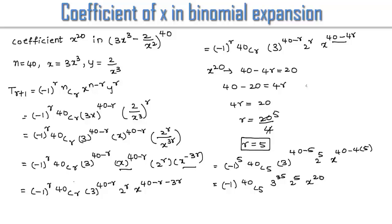Therefore, the coefficient of x power 20 is minus 40C5 into 3 power 35 into 2 power 5. This was a basic introduction on how to find the coefficient of x in the binomial expansion.